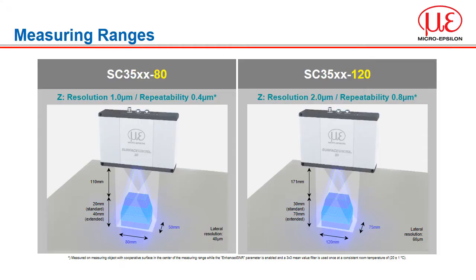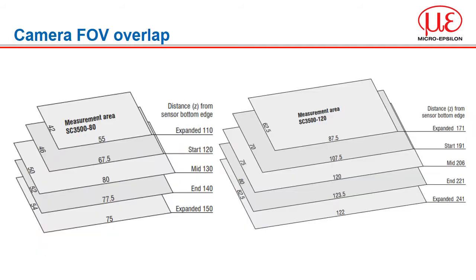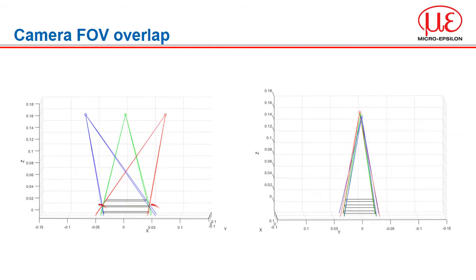Two sensor ranges will be offered at first: the dash-80 and the dash-120 model. The numbers refer to the width of the area at the mid part of the measurement range. Because we have two cameras viewing the same area, the field of view we can measure is shaped by how the cameras overlap. On the dash-80 model, the X field width reduces from 80mm down to 75mm, whereas the longer range dash-120 reduces down to 122mm at the end of range. The reason for this is the alignment of the two cameras and projector.